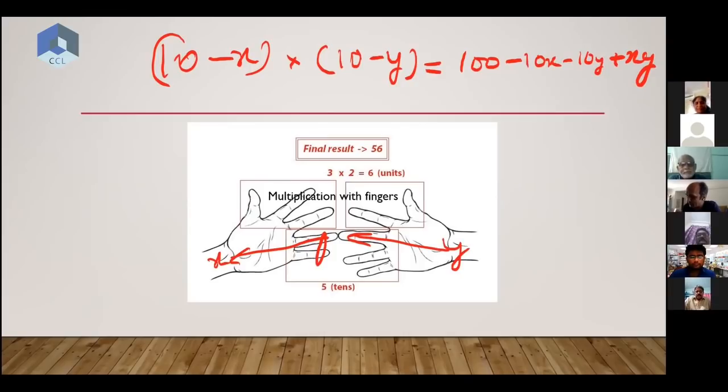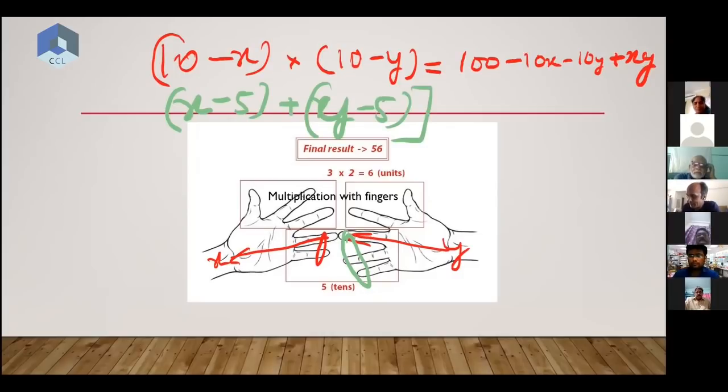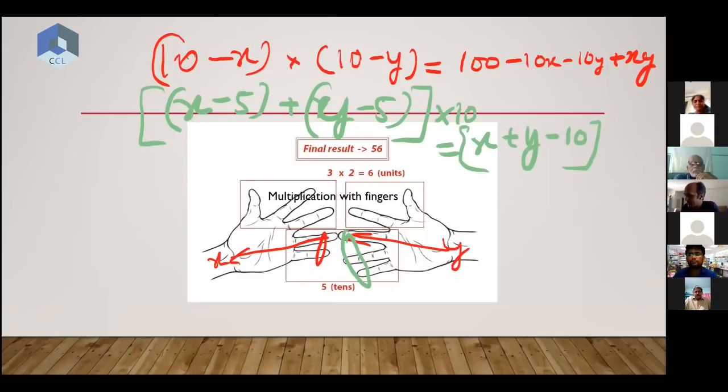Then fingers at the bottom - how many are those? The number of fingers on the bottom, let me change color, I'll color with green. The bottom fingers are x minus 5, because you have seven fingers and the bottom fingers are two, so x minus five is two. And then he's adding that to how many fingers here - y minus five - and then he's multiplying all of this by 10.